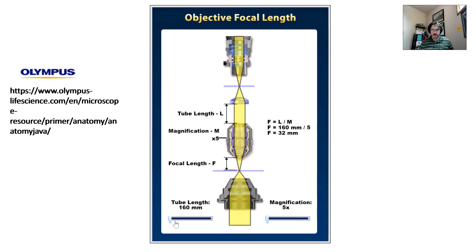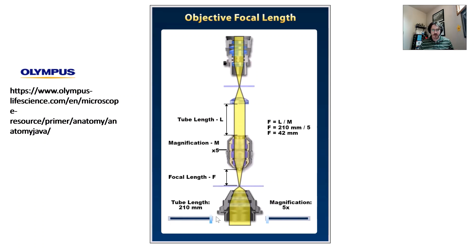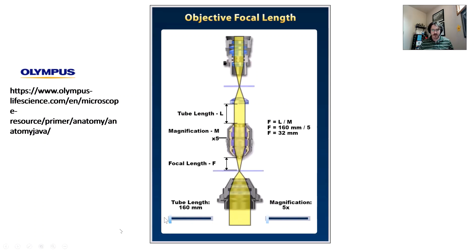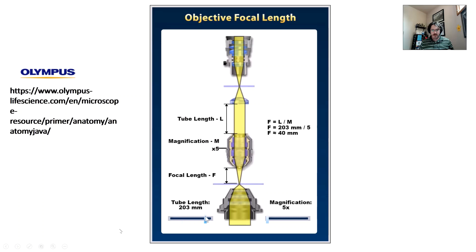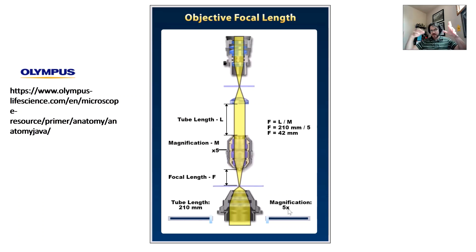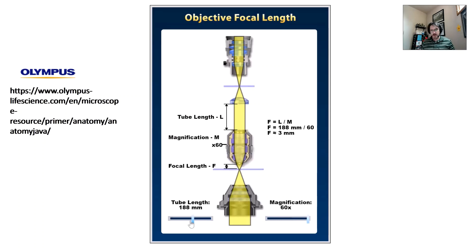The tube length also plays a role: if your tube length gets longer, your focal length gets longer, and this plays into another parameter we care about called working distance.